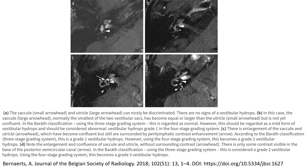In image A, the saccule (small arrowhead) and utricle (large arrowhead) can nicely be discriminated with no signs of vestibular hydrops. In image B, the saccule, normally the smallest of the two vestibular structures, has become equal or larger than the utricle, small arrowhead indicated, but it is not confluent. In the Gibson classification using the three-state grading system, it is regarded as normal; however, this could be regarded as a mild form of vestibular hydrops and should be considered abnormal — vestibular hydrops grade 1 in the older grading system.